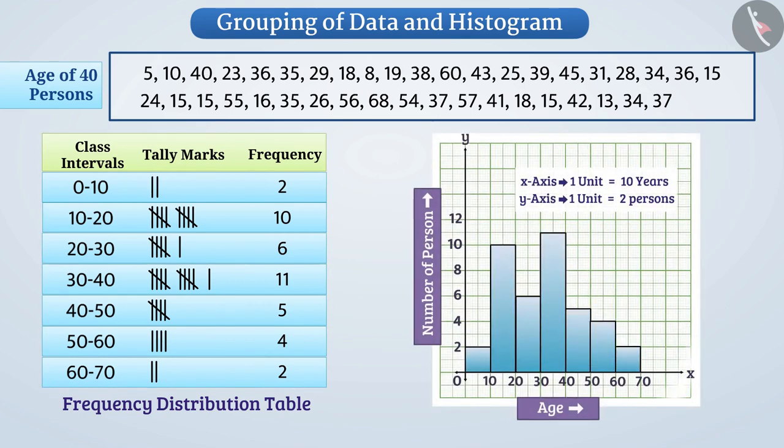In this graph, the class intervals are presented on the horizontal axis. For example, 0 to 10, 10 to 20, etc. Similarly, the number of persons are represented on the vertical axis.